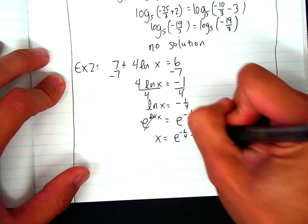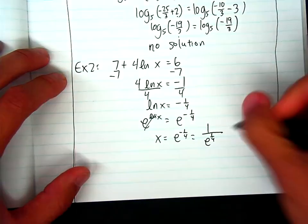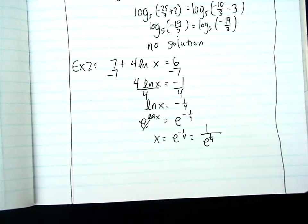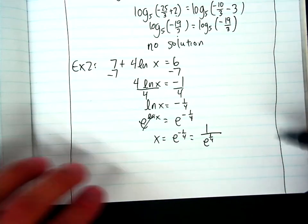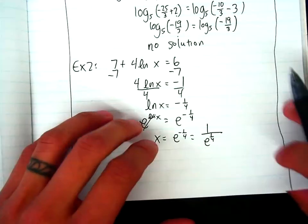So I'll end up with x equals e to the negative 1 fourth. You could also write it as 1 over e to the 1 fourth. If you really wanted to go even further, you could write 1 over 4th root of e. It doesn't matter. And that was your answer. You can also put that in your calculator. Okay?